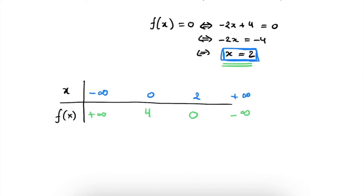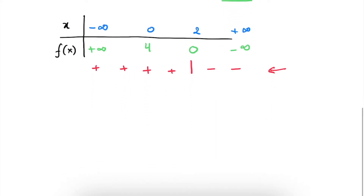Now that we have rewritten our results in this tabular form, we can very easily figure out where our function is positive or negative. We know that at x equal to 2, our function changes sign. We see that we have positive signs before that point, and since our function does not cross 0 between those numbers, we know that in between these numbers, our function will also be of positive sign. Then at 2 it will change sign, so we know it will be a minus after that.